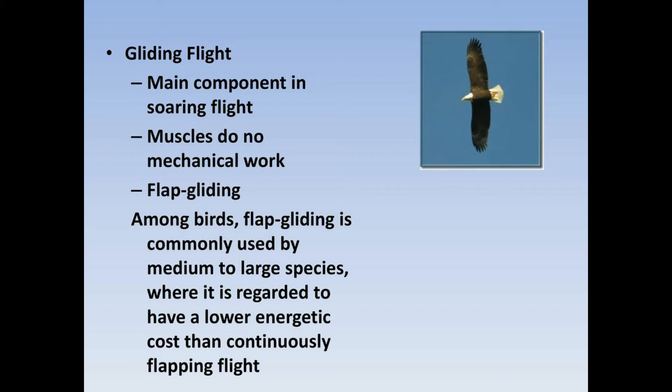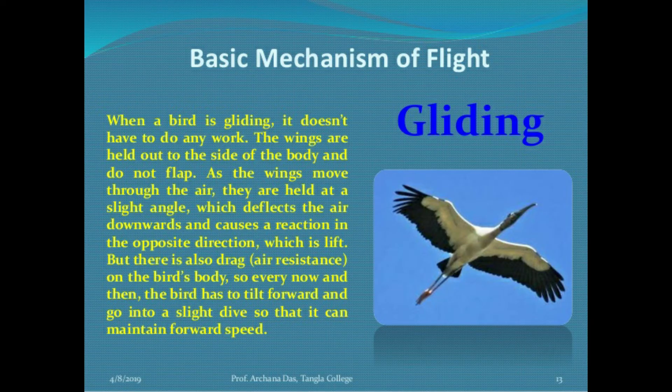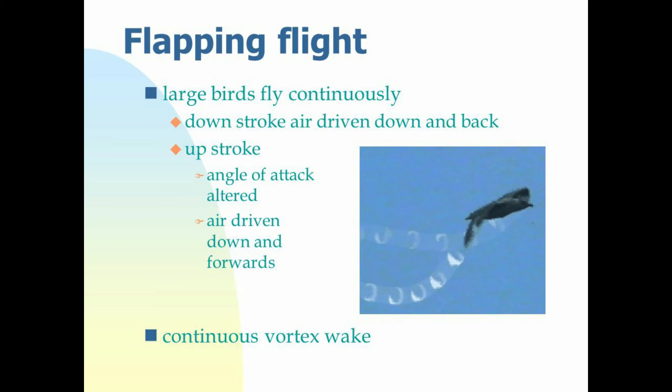In active flight, when little or no support can be gained from upward air currents, the same effect can be achieved by flapping the wings. As the bird moves through the air, the air flows more quickly over the curved upper surface than over the lower surface, and this reduces the air pressure on the top of the wing. Compared with the air pressure below the wing, there is a net upward pressure on the wing, which gives lift to the bird.